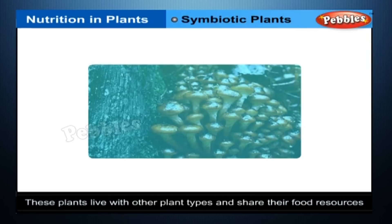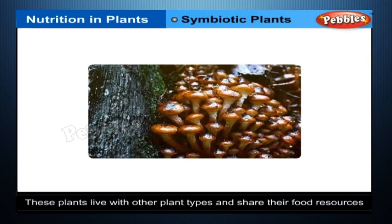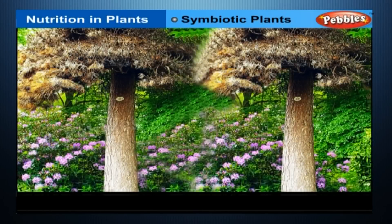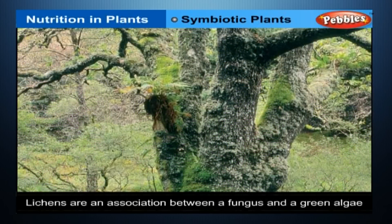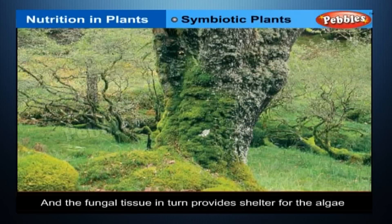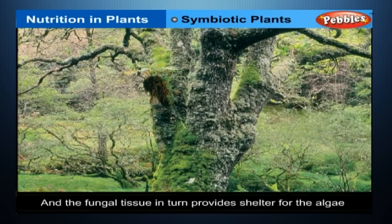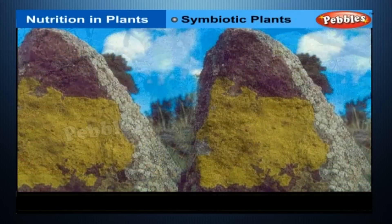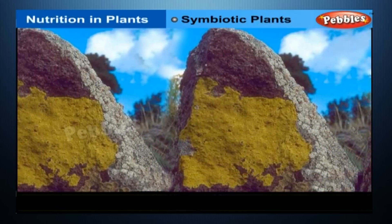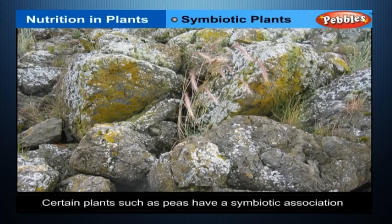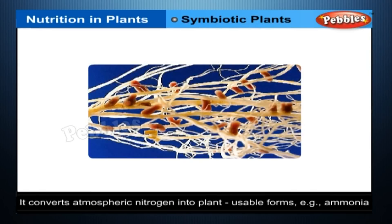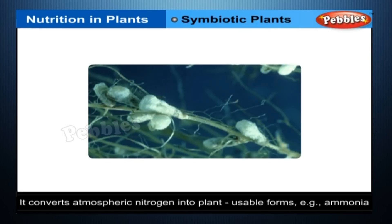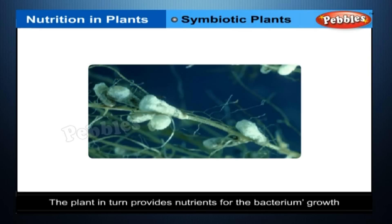Symbiotic Plants. There are certain plants which live with other plant types and share their food resources — both types mutually gain from each other, and such relations are said to be symbiotic. Lichens are an association between a fungus and green algae: the fungus obtains nutrients from the algae, and the fungal tissue in turn provides shelter for the algae, allowing it to grow in harsh conditions such as rock surfaces. Certain plants, such as peas, have a symbiotic association with bacteria such as Rhizobium, which converts atmospheric nitrogen into plant-usable forms such as ammonia. The plant in turn provides nutrients for the bacterium's growth.